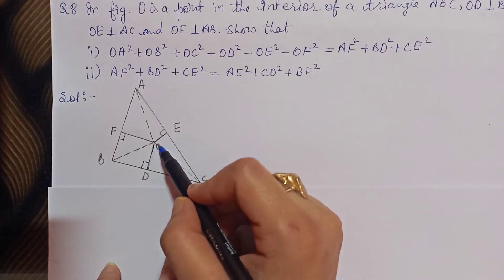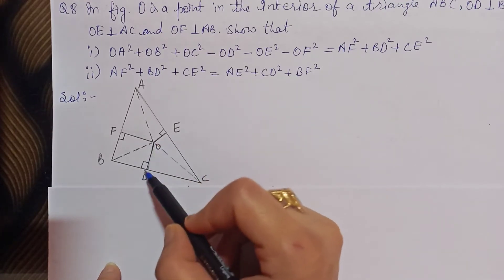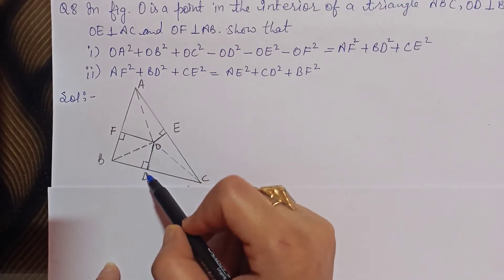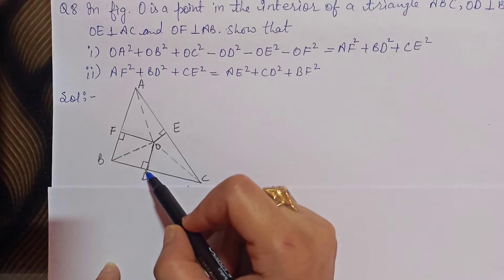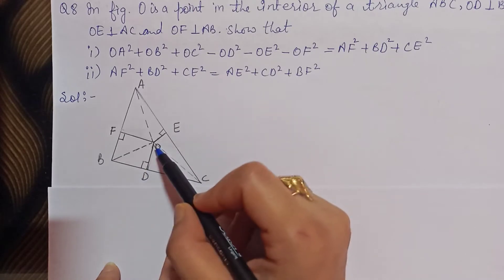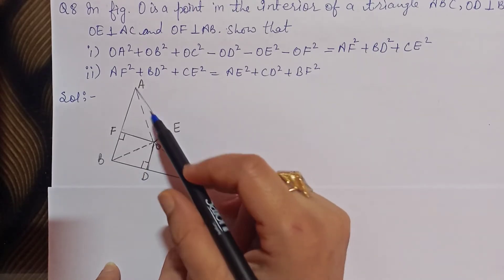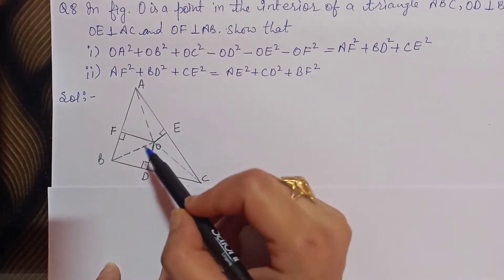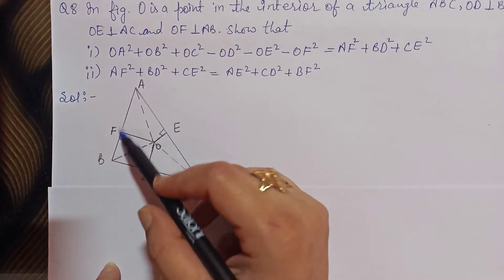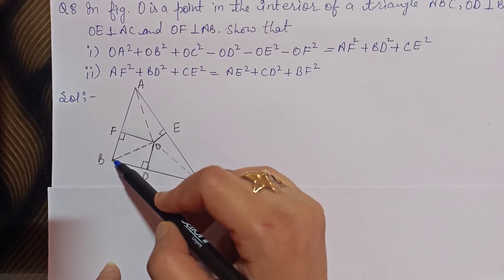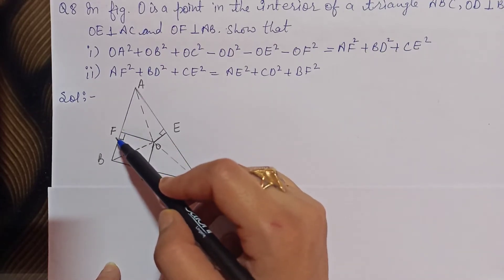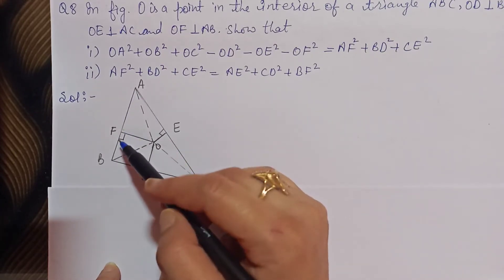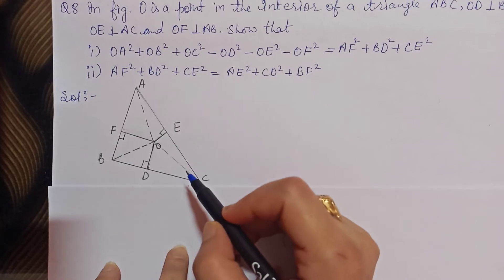آپ کے پاس figure دی گئی ہے، O ایک interior point ہے۔ OD perpendicular ہے BC پر تو angle D آپ کے پاس 90° ہو جائے گا۔ OE perpendicular ہے AC پر تو angle E آپ کے پاس 90° ہو جائے گا۔ OF perpendicular ہے AB پر تو angle F آپ کے پاس 90° ہو جائے گا۔